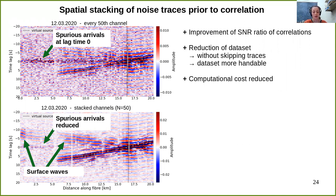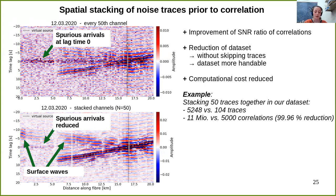In addition, we reduce our dataset without just discarding traces — we still include the information of each trace in the analysis. The reduction makes the dataset more handleable and reduces computational cost. For example, if we reduce our dataset by a factor of 50 and look at every possible combination of stations, the computational cost is reduced by 99.96%, as we don't have to compute 11 million but only 5,000 correlations.